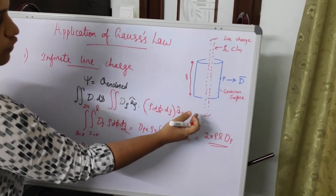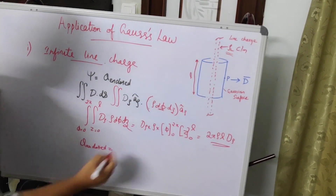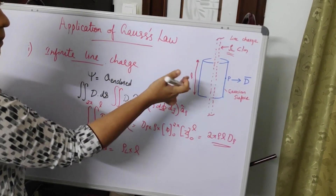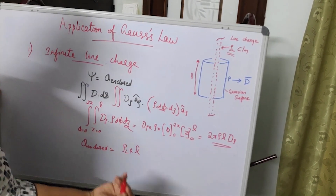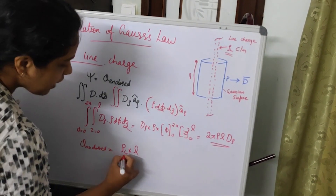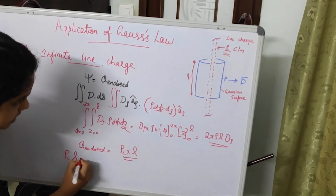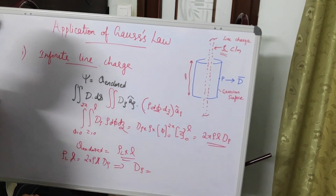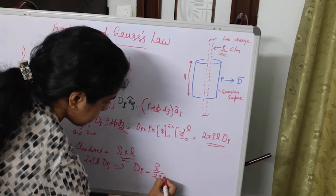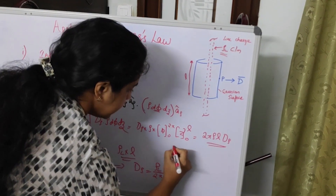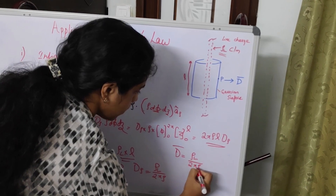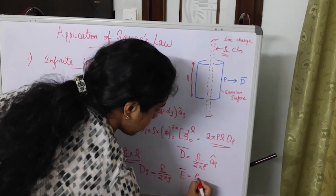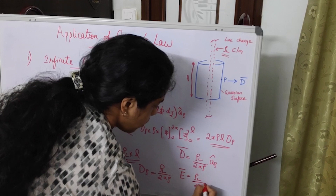For Q enclosed, unlike the last case of a point charge, here we have an infinite line charge with charge density ρ_L. The total charge is ρ_L · L, obtained by integrating dz from 0 to L. Equating the two sides: ρ_L · L = 2π ρ · D_ρ, giving D_ρ = ρ_L / (2π ρ). Therefore, vector D = (ρ_L / 2πρ) A_ρ, and electric field E = ρ_L / (2π ε ρ) A_ρ.